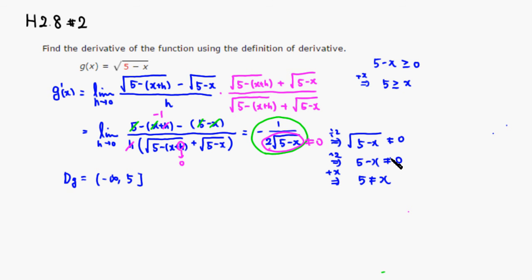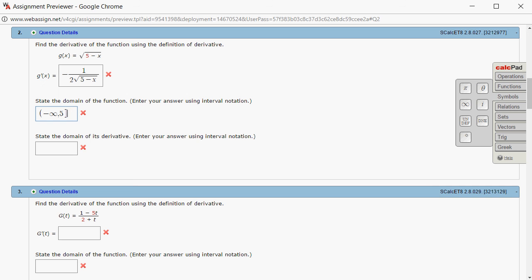So before, we included 5, but for the derivative, we have to exclude 5. So therefore, domain of g prime would be from negative infinity to 5, not including 5. So let's type that in.